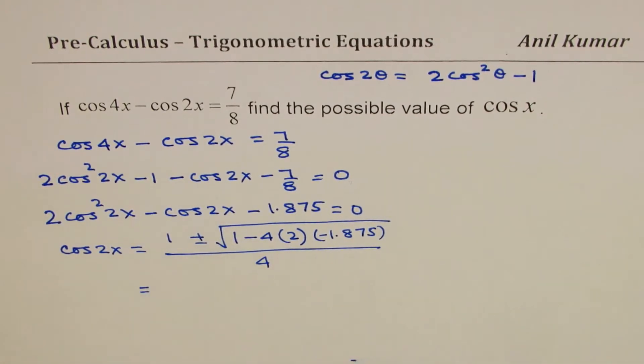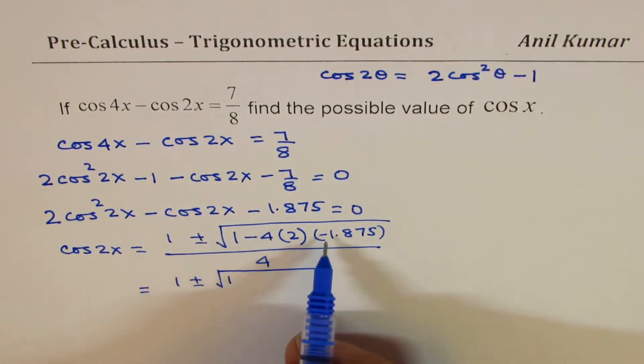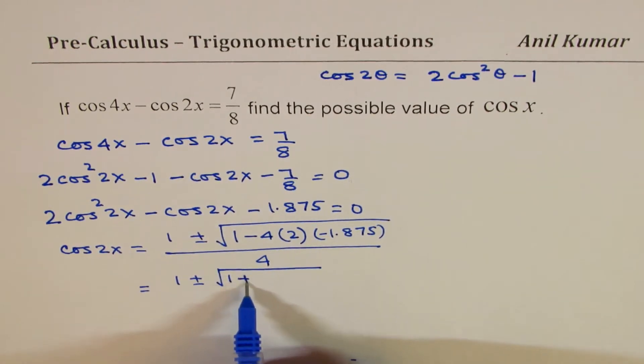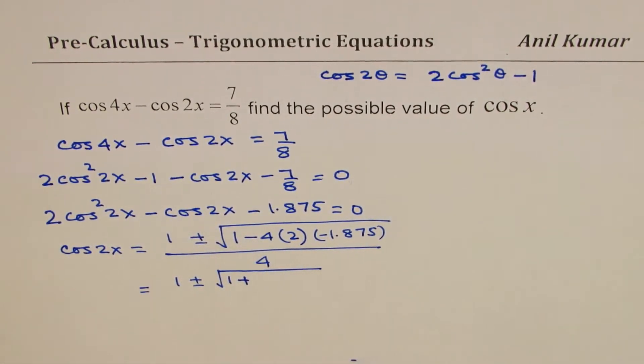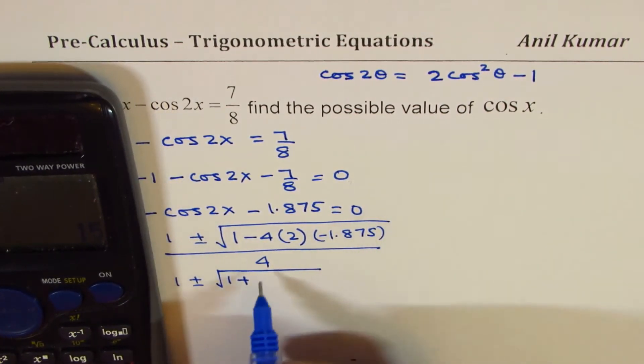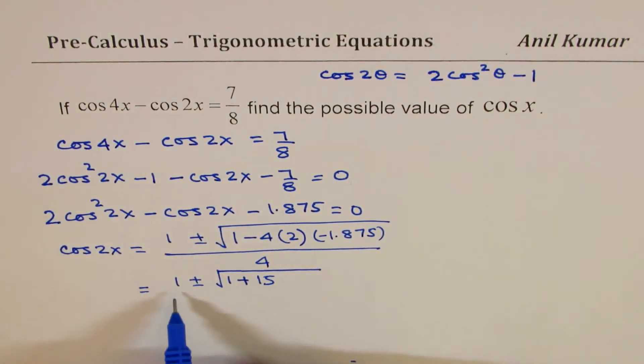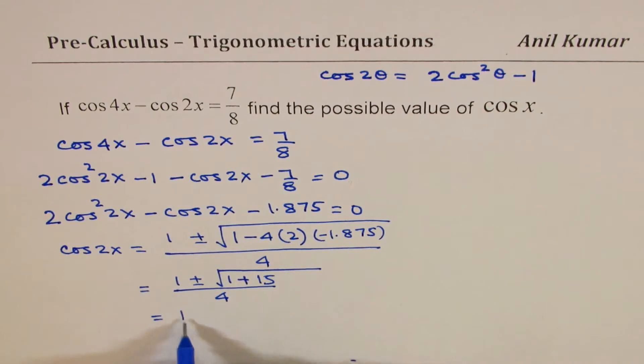The value of cos 2x is 1 plus minus square root of 1. Minus and minus becomes plus. Let's multiply, so we have 4 times 2 times 1.875, that is 15. So we get 15 over 4. Now 1 plus 15 is 16, so we get this as 1 plus minus 4, over 4.